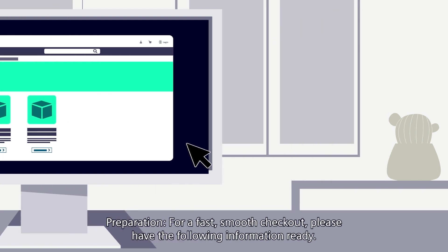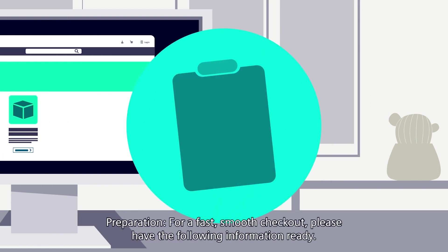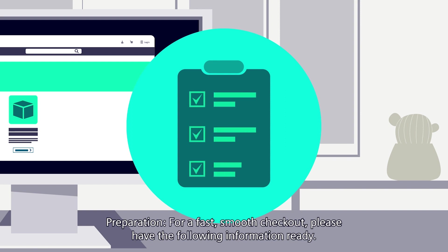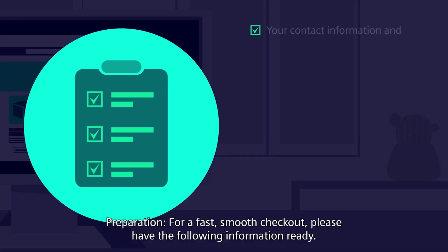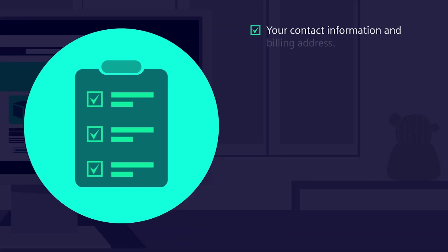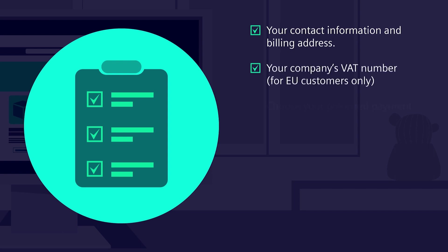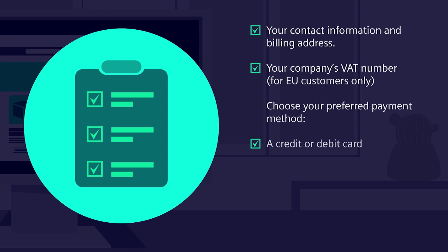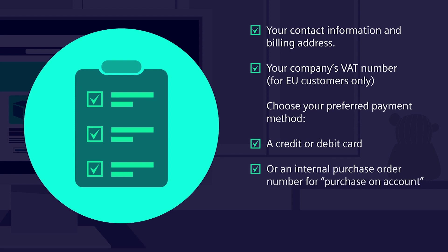Preparation for a fast, smooth checkout: please have the following information ready — your contact information and billing address, your company's VAT number (for EU customers only), and your preferred payment method: a credit or debit card, or an internal purchase order number for purchase on account.